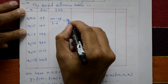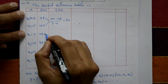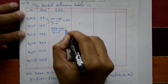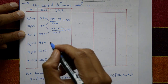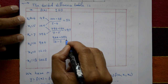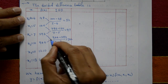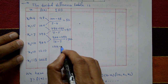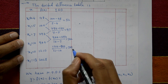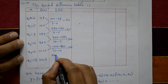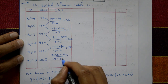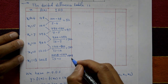Now find the first divided differences. (100 - 48)/(5 - 4) = 52. Next: (294 - 100)/(7 - 5) = 97. Next: (900 - 294)/(10 - 7) = 202. Next: (1210 - 900)/(11 - 10) = 310. Next: (2028 - 1210)/(13 - 11) = 409. These are the first divided differences.